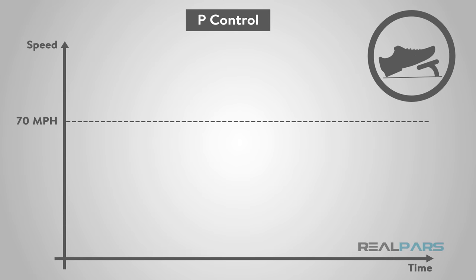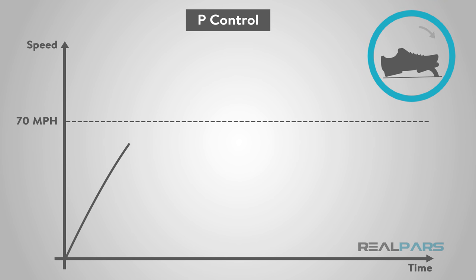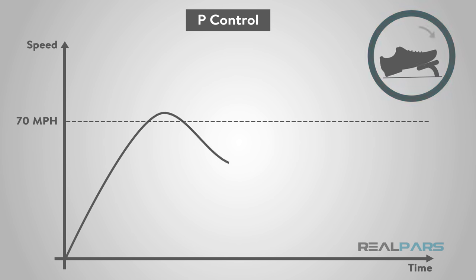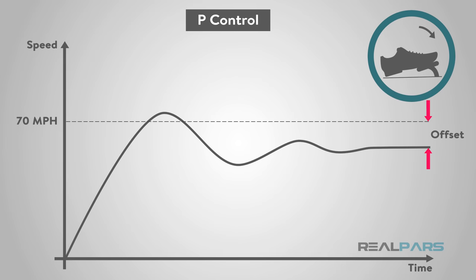As a PID functional refresher using the car cruise control as an example: P, or proportional, means the farther you are from the desired speed, the more you press the gas pedal, and the closer you are, the less you press on it. This works well, but when you get to the desired speed, based on this rule, you would let off the gas completely, and the end result is your car slows down and stays a little below the desired speed. Proportional control is the main ingredient of any control, but may be a little inaccurate.